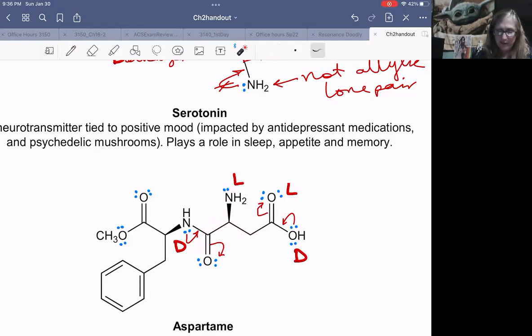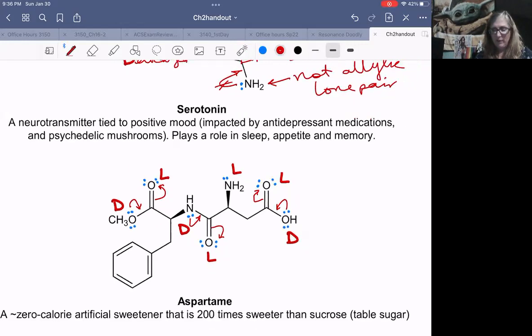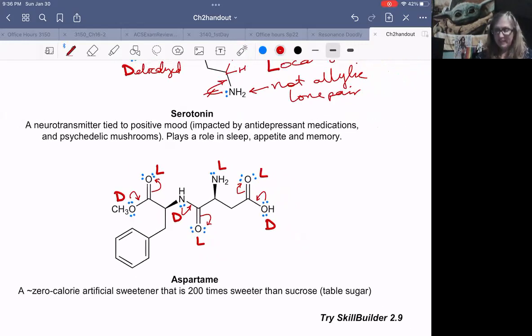And finally, with our other carbonyl, the oxygen that is adjacent to the carbonyl, there's resonance here. So this is a delocalized lone pair, but up on the carbonyl, the oxygen that's on the double bond, those lone pairs can never go anywhere. Same thing with this oxygen, localized. So that allylic lone pair resonance is key.